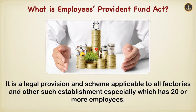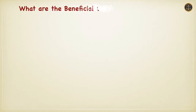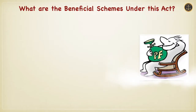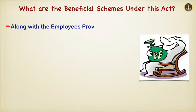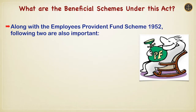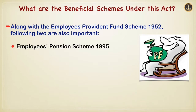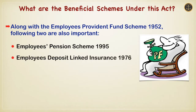What are the beneficial schemes under this act? Along with the Employees Provident Fund Scheme 1952, the following two are also important: Employees Pension Scheme 1995 and Employees Deposit Linked Insurance 1976.